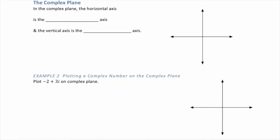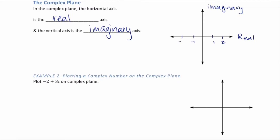The complex plane. In the complex plane, the horizontal axis is the real axis and the vertical axis is the imaginary axis. We label the real axis with whole numbers as usual, and the imaginary axis with i, 2i, 3i, negative i, negative 2i, and so on.